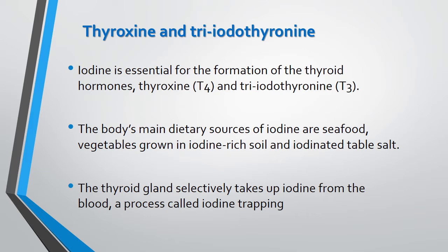The dietary sources of iodine are seafood, vegetables grown in iodine-rich soil, and iodinated table salt. The thyroid gland selectively takes up iodine from the blood in a process called iodine trapping.